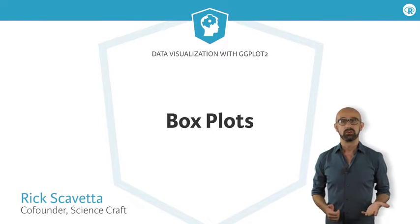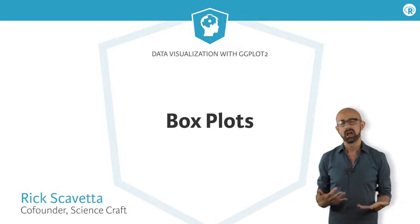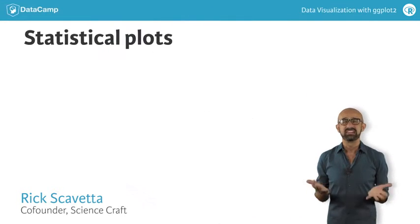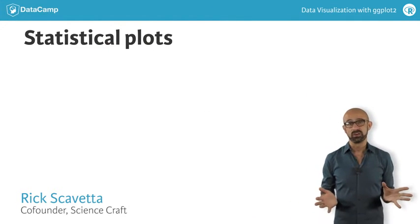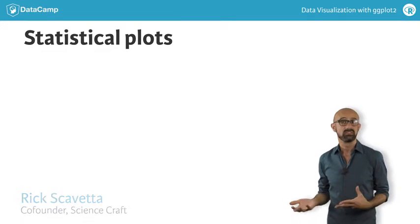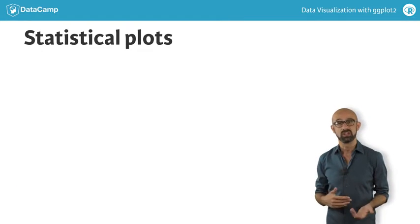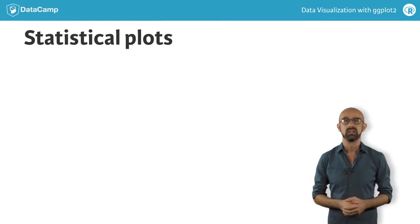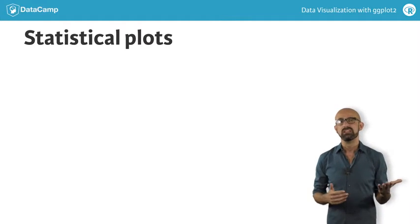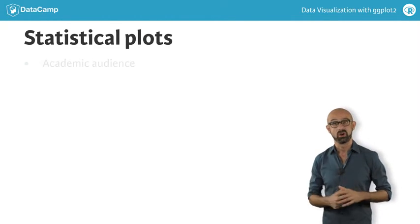In this chapter, we'll take a look at our first class of specialized plots, what I like to call statistical plots. Actually, all the plots we've made so far can be called statistical plots, since data visualization operates at the intersection of design and statistics. However, in contrast to the plots we've seen previously, these are more well-suited to an academic audience.